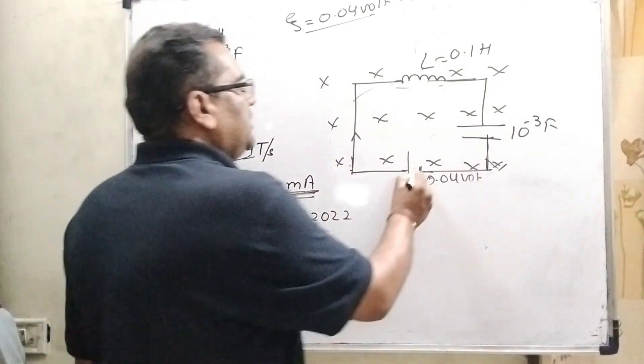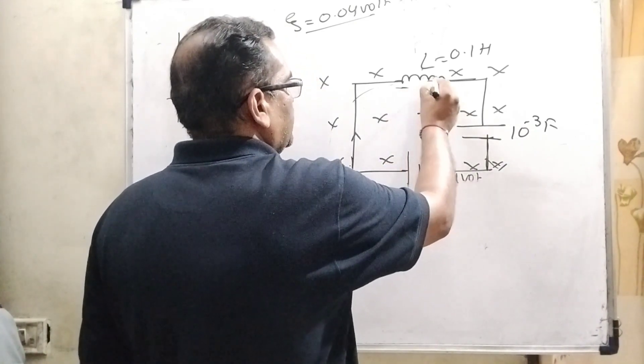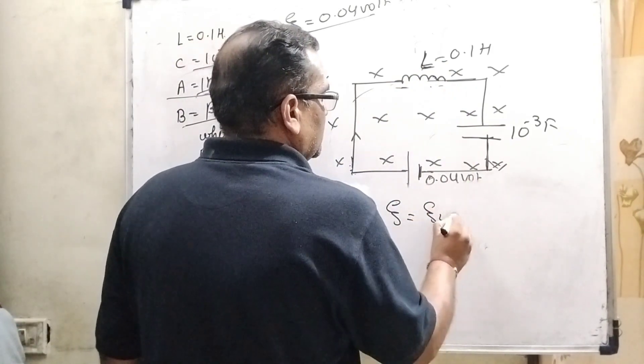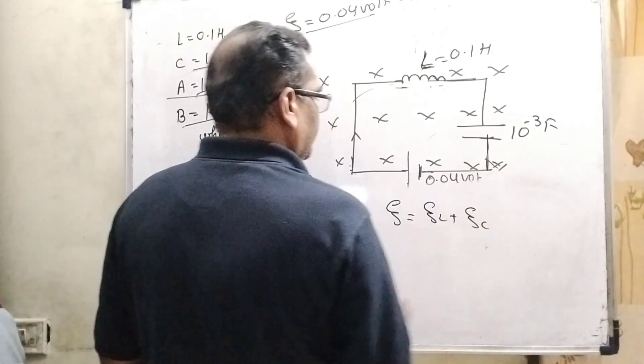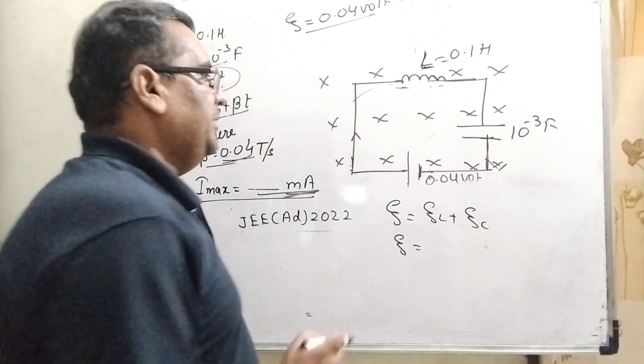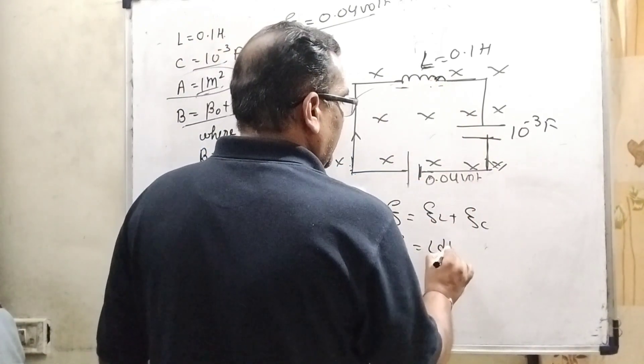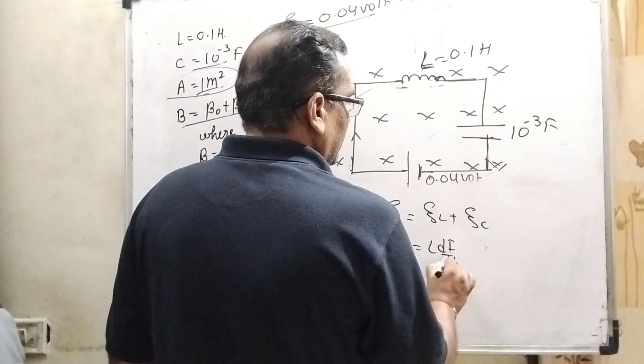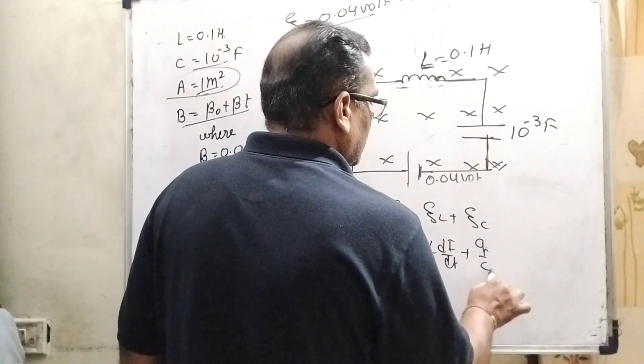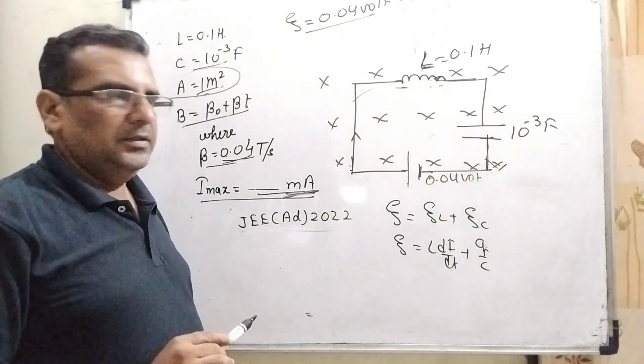Now, here this EMF is equal to sum of this potential which is passing through this inductance coil and the capacitance. So here EL and EC. What is the formula of EL? EL means potential of inductance, that is L into dI by dt. And here in the capacitance, that is Q by C.